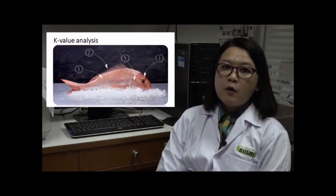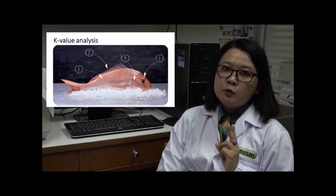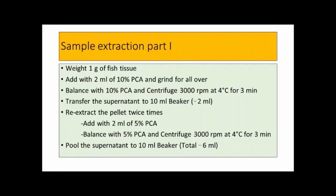Okay, that concludes the K-Value analysis. I will now summarize the two parts of sample extraction. For sample extraction part 1, it starts from weighing 1g of fish tissue, adding 2 ml of 10% PCA, and grinding. Balance with 10% PCA and centrifuge at 3,000 rpm at 4 degrees Celsius for 3 minutes. Transfer the supernatant to a 10 ml beaker, total volume about 6 ml, and re-extract the pellet twice.